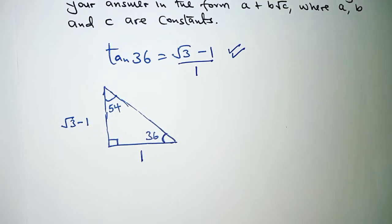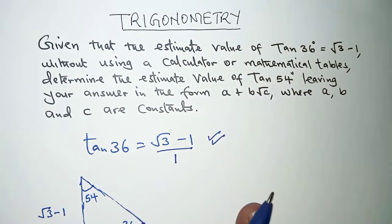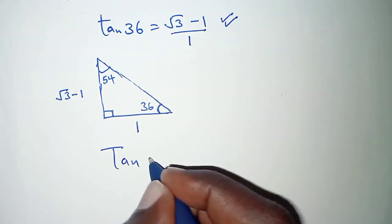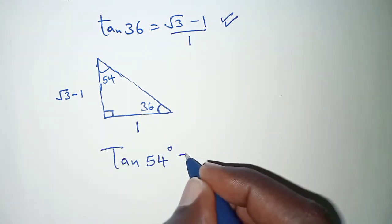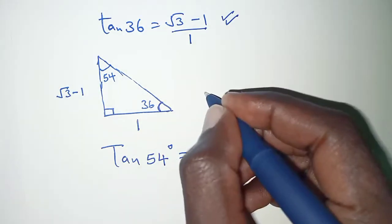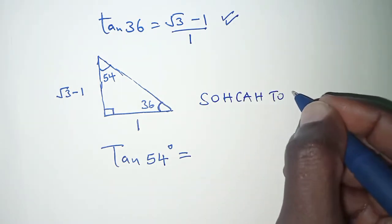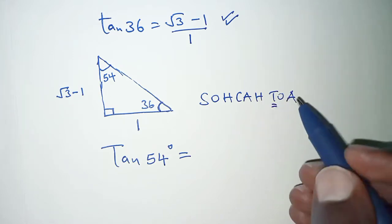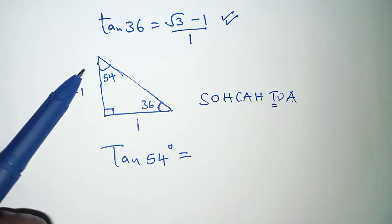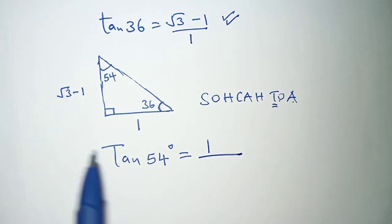Root 3 minus 1, and then from this we are therefore required to estimate the value of tan 54. So that means for us to get the value of tan 54 degrees we'll simply come at angle 54 and argue the same. So if we use SOHCAHTOA, we have to see the boundary of tan. So for tan we have again opposite over adjacent, and when you are at angle 54 degrees, opposite is 1 and adjacent is root 3 minus 1.